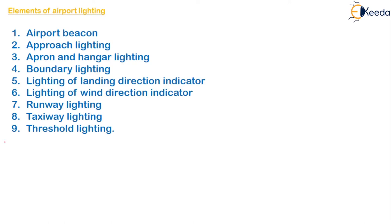These are the nine elements: the first one is the airport beacon, second is the approach lighting, third is the apron and hangar lighting, fourth is the boundary lighting, fifth is the lighting of the landing direction indicator, sixth is the lighting of the wind direction indicator, seventh is the runway lighting, eighth is the taxiway lighting, and the last one is the threshold lighting.